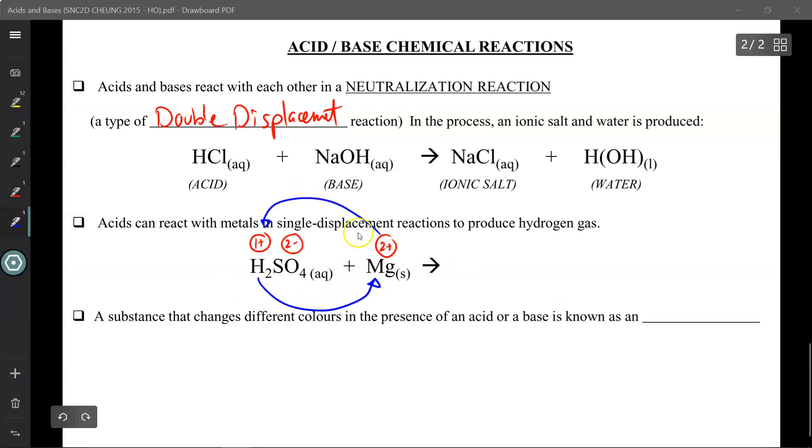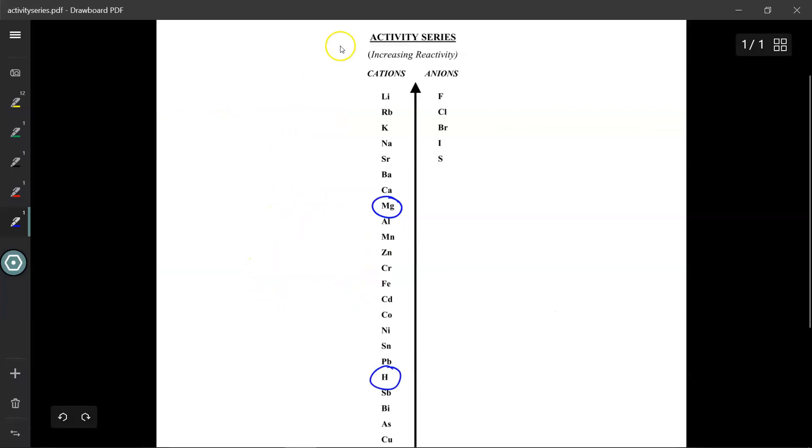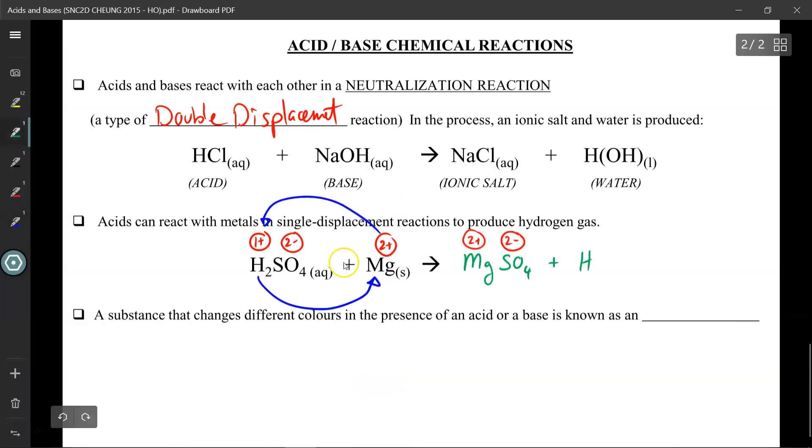Alright, so this is cationic single displacement where the cations are going to displace each other. Again, check the activity series. Magnesium is higher so it can bump out the hydrogen, creating the brand new partner of magnesium and sulfate. Don't forget to zero sum - in this case it's fine, two and two, so we don't need any subscripts, but hydrogen is of course diatomic, so don't forget the two.